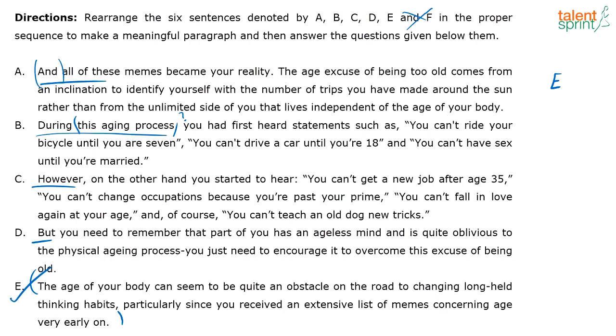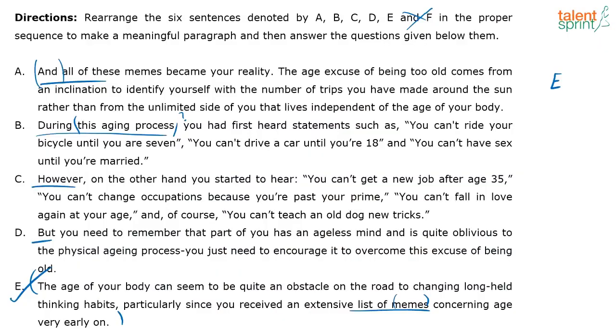So the remaining two sentences have to connect to 'list of memes.' What is a meme? Something that is passed on from generation to generation. For example, people say the right age for a girl to get married is 21 — that's a meme. Go back to the context and identify memes in the options. Which sentences are talking about memes? Once I find them, I can sequence them. Out of A, B, C, and D, which sentences address these memes — basically giving examples?